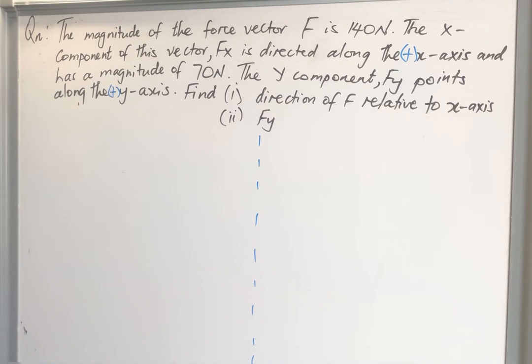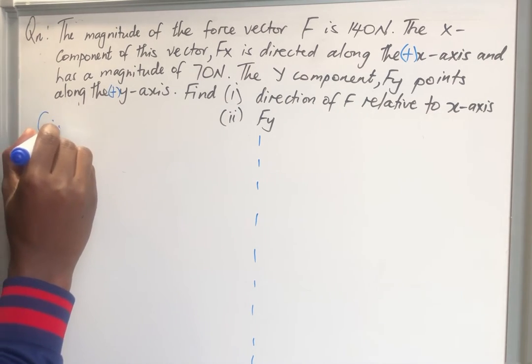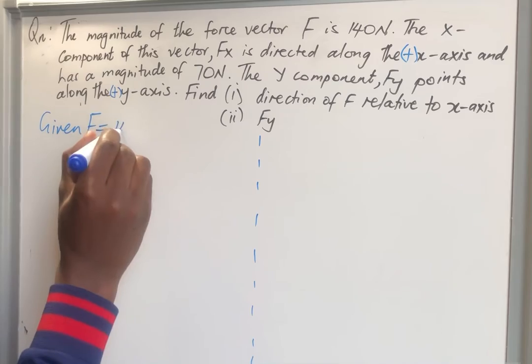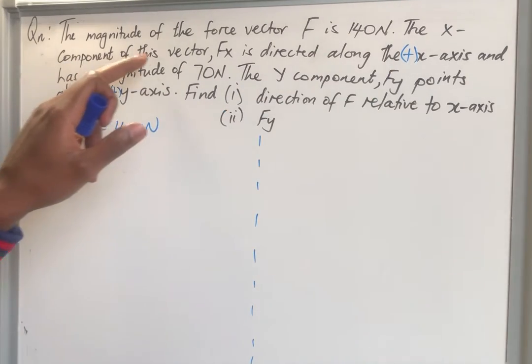Hello ladies and gentlemen, we have a question on the board. The magnitude of the force vector F is 140 newtons, so let me collect the data. Given F is equal to 140 newtons. The x-component of this vector, Fx, is directed along the positive x-axis and has a magnitude of 70 newtons.